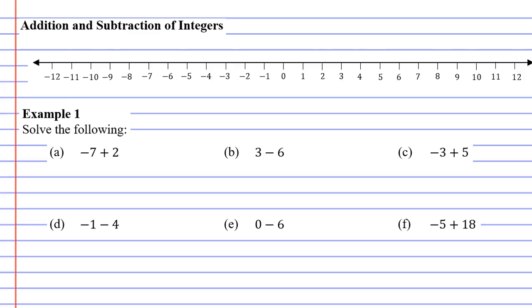Let's start by solving question A. The first thing you need to do is take note of the very first number. So in this case, it's negative 7.